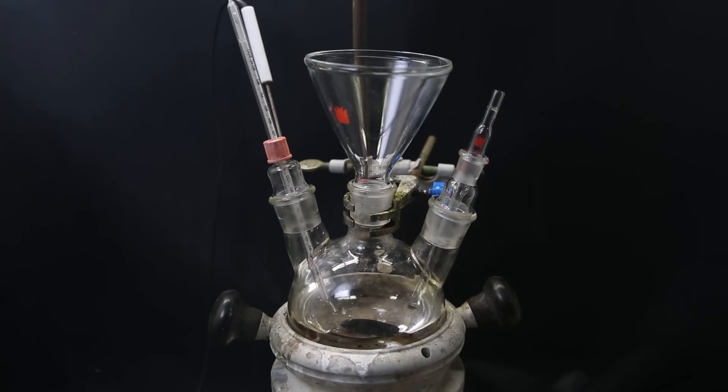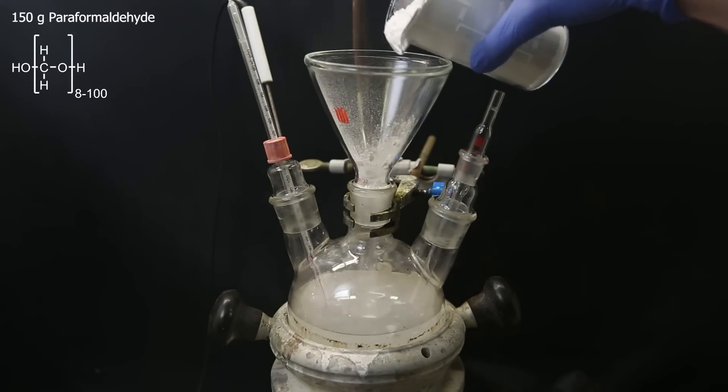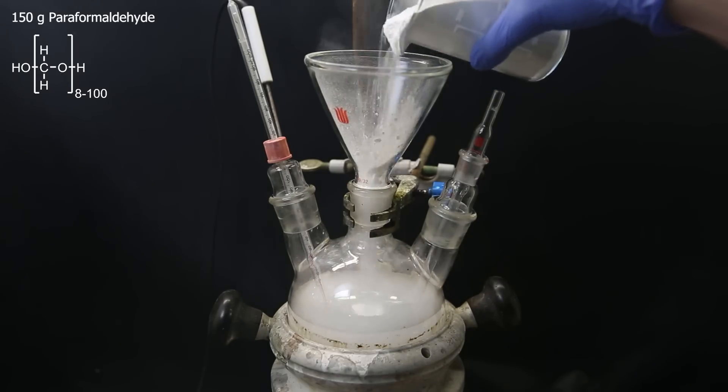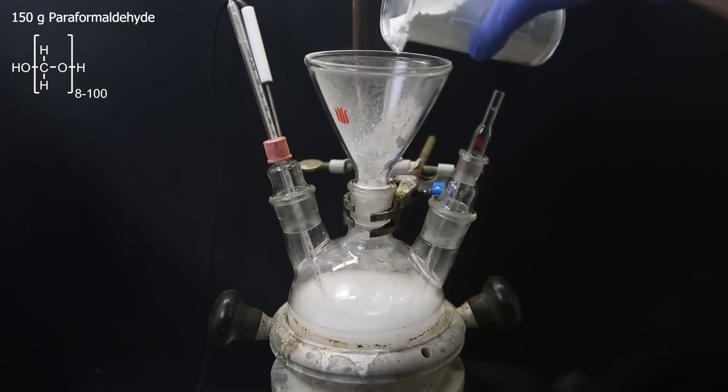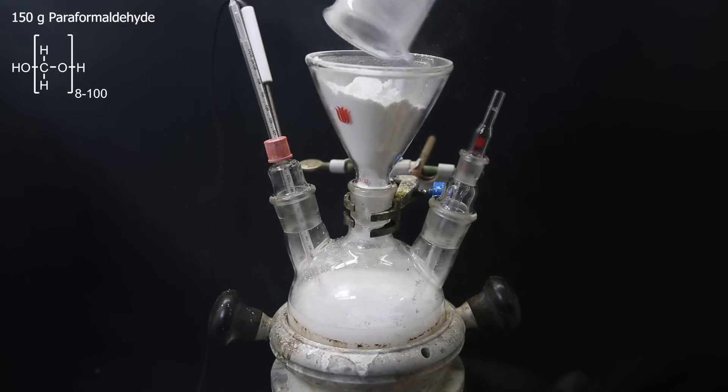I then attach a funnel, and while stirring, I add 150g of paraformaldehyde, which can just be bought online, and is also very cheap. It should be done in a very well-ventilated area, because the dust is irritating. It's very fluffy, and decided to all fall out at once.